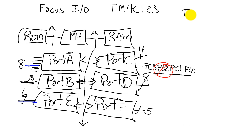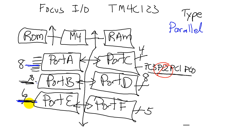Let's look at the types of I/O we have. We have parallel, which means that all at once we can set all 6 bits of port E simultaneously. Then we have serial I/O, and we'll see a couple of types of serial I/O.